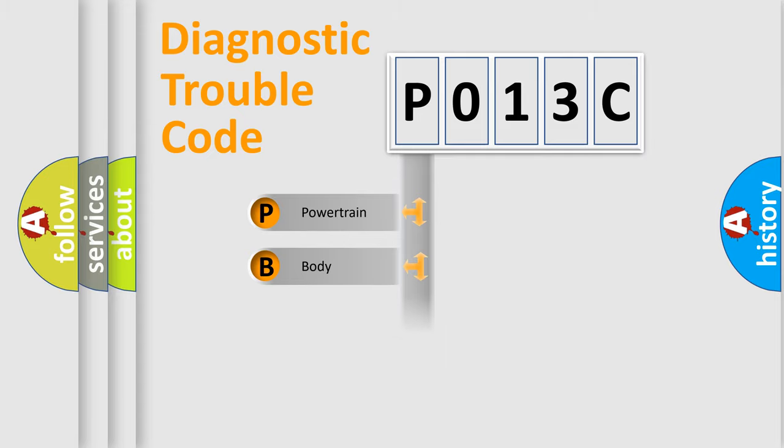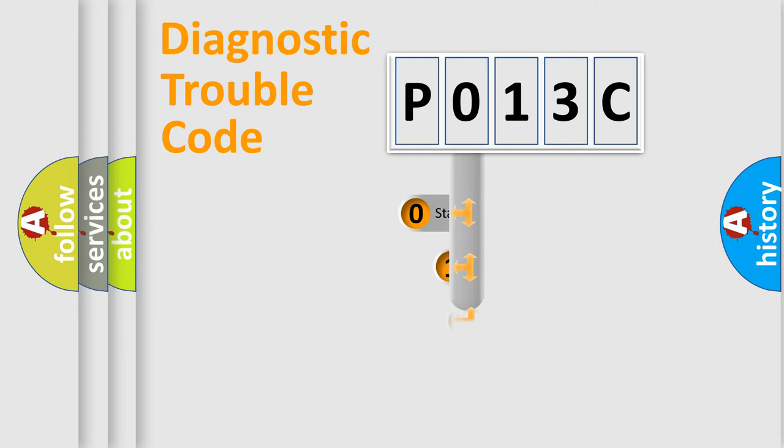We divide the electric system of automobile into four basic units: Powertrain, Body, Chassis, and Network. This distribution is defined in the first character code.